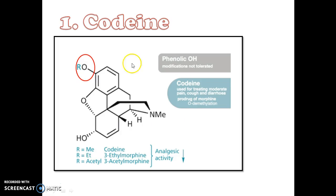Now I will proceed with analogs of morphine. First, codeine. Codeine, the 3-methoxy derivative of morphine, is a relatively weak narcotic analgesic, but it undergoes O-demethylation to morphine.